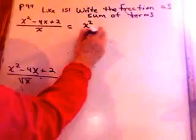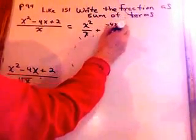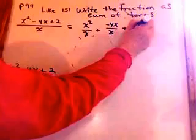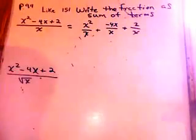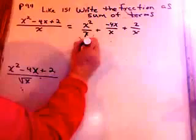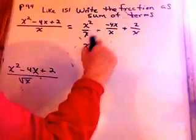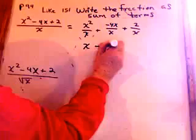x squared over x plus negative 4x over x plus 2 over x. And then reduce x into x squared. So that's x plus negative 4, or I could just call that negative 4.